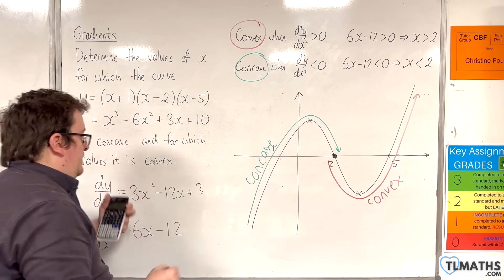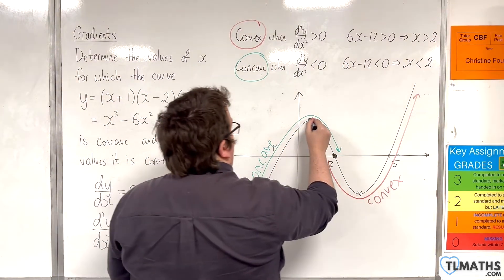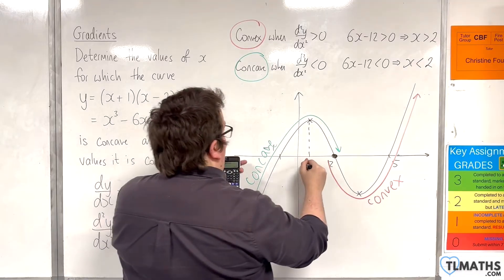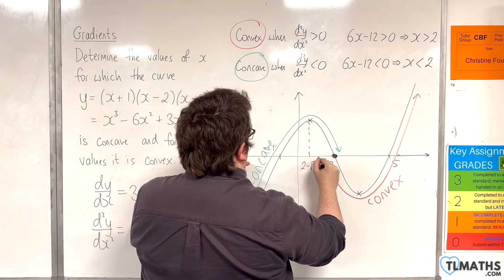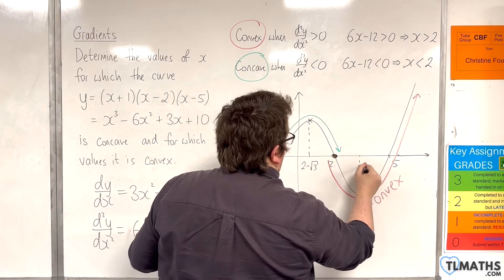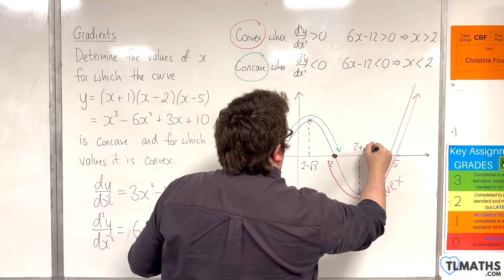We get, so when dy/dx is 0, this point is 2 - √3. And this point is 2 + √3.